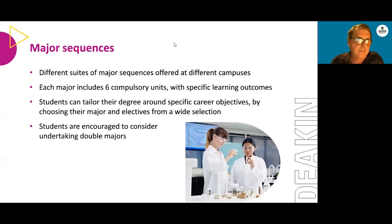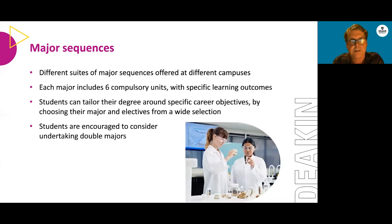Talking about the basic structure of the program, we'll first look at the major sequences, which are specialist training areas normally undertaken in second and third year. Each individual major is made up of a suite of thematically linked and related compulsory units — you need to do six of them — and they have specific learning outcomes.